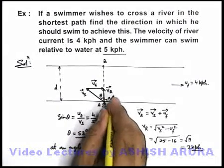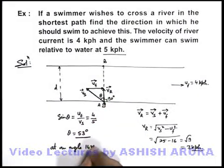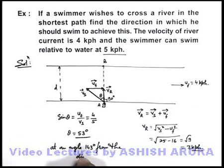that is 90 plus 53, that will be 143 degrees from the direction of river current. This is the direction in which he should swim. So this is the answer to the problem.